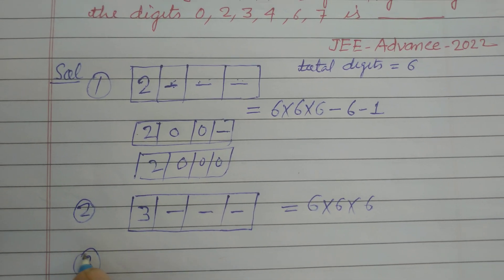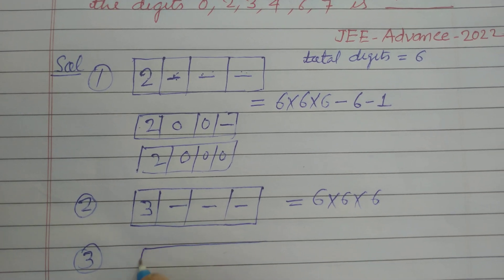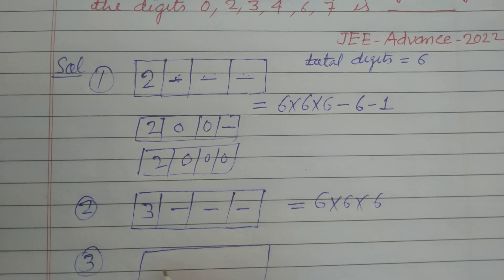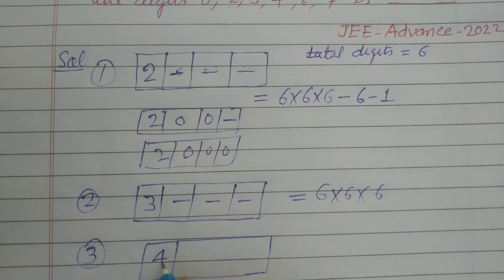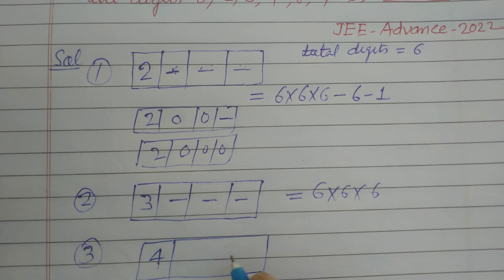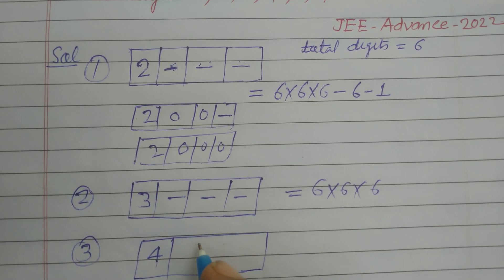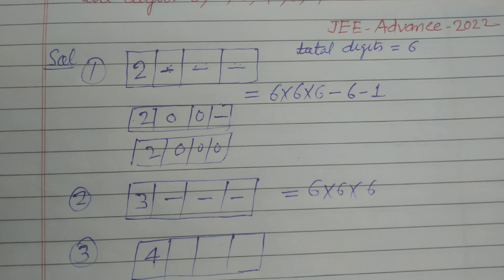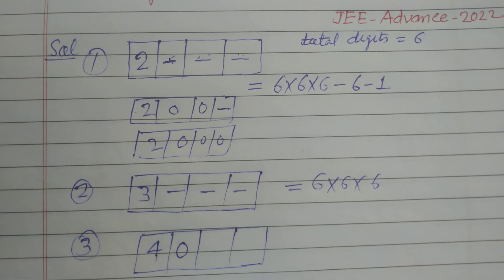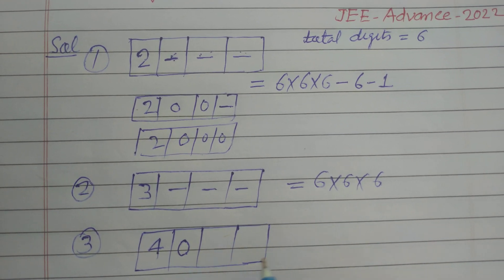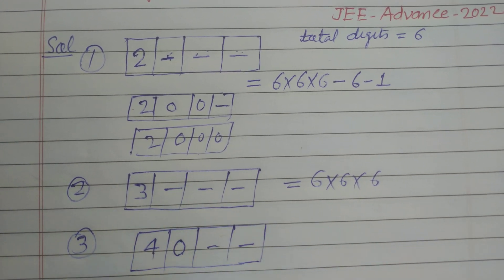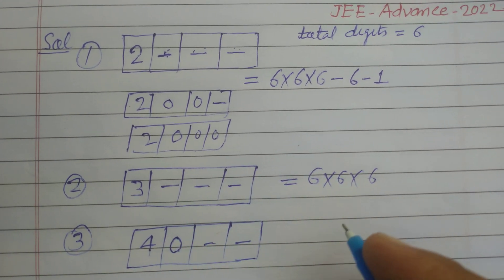And the third condition is when we put here 4 at 1000 place, then we have 3 vacant places and this can be put at 0 at 100 place, then they can be filled by 6, 6, 6 ways. So total ways are 6 into 6.